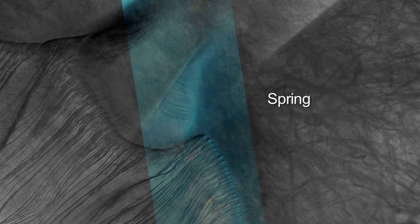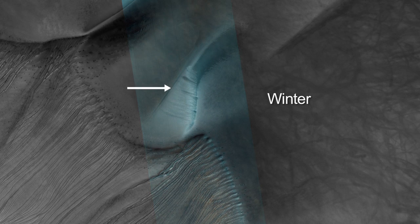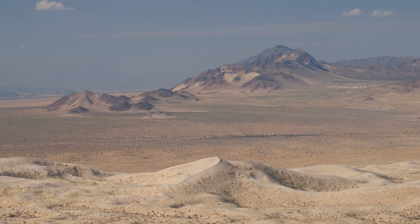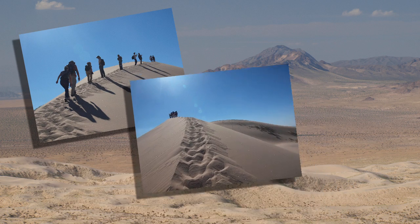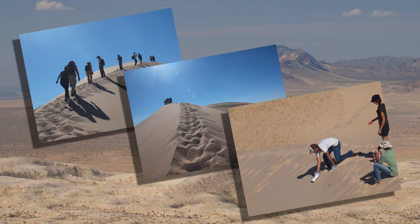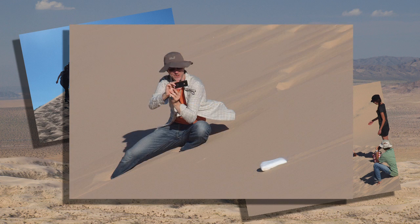Frozen carbon dioxide accumulates on the surface, and we think that some of this accumulation will compress down and actually form ice slabs and ice blocks. We bought some frozen carbon dioxide — dry ice blocks — and we took it out to a dune slope and we put it down and we saw what happened.